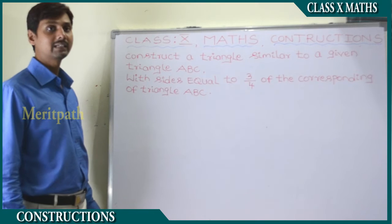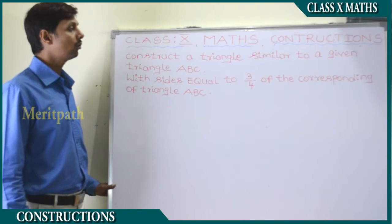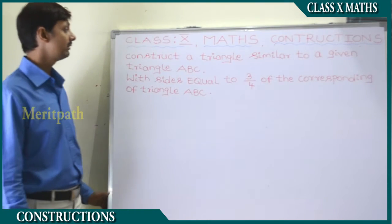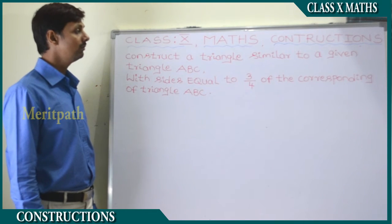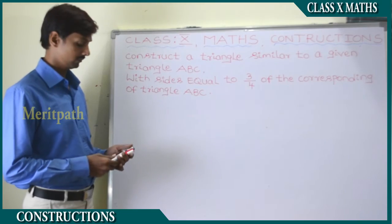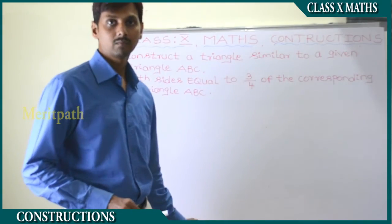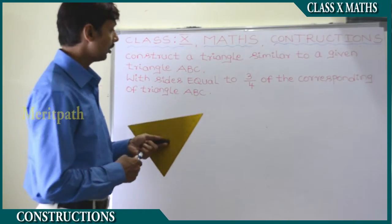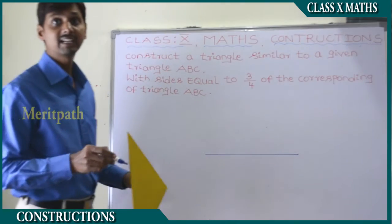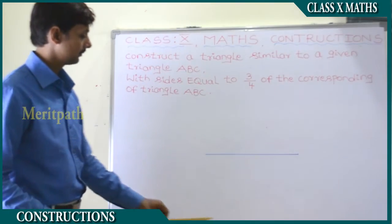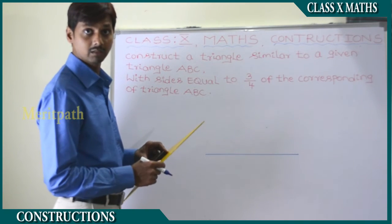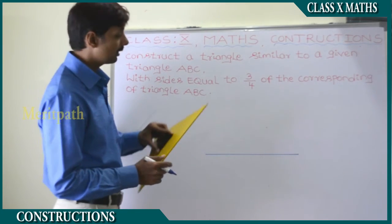Construct a triangle similar to a given triangle ABC with sides equal to 3/4 of the corresponding sides of triangle ABC. Take any side of the triangle as the base and draw above it.